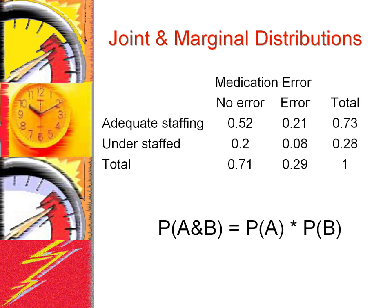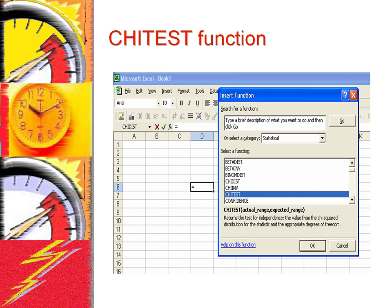Under the assumption of independence of staffing and medication errors, the probability of each cell in the table can be calculated as a product of the row and column marginal values. This table, constructed from our expectation of independence, can now be compared to observed visits. Chi-square tests compare observed number of visits to the number of visits expected under the assumption of independence. In Excel, the chi-test function can be used to compare observed to expected occurrences. This function gives a probability of observing the two distributions by random chance. If this probability is less than 0.05, we reject the hypothesis that the two sets of values are not related.